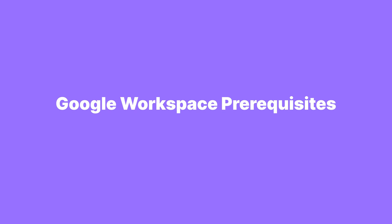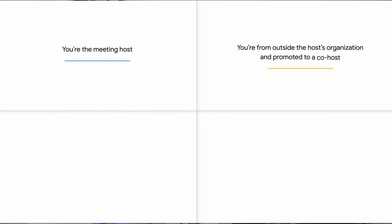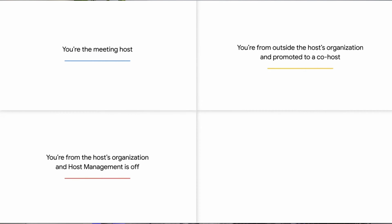First things first, let's talk prerequisites. Before you hit record, make sure that you're equipped with a Google Workspace edition that supports this feature, like Business Standard or Education Plus, and that you have the right permissions. You either need to be the meeting organizer, in the same organization as the organizer, or a teacher for education accounts. This is crucial for accessing the recording function and aligns with Google's guidelines for secure and responsible use.